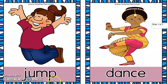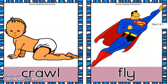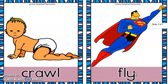Jump — lompat. Dance — menari. Crawl — merangkak. Fly — terbang. Can you fly? I can't fly — kita tak boleh terbang. Awak boleh merangkak tak? Boleh — so, I can crawl.